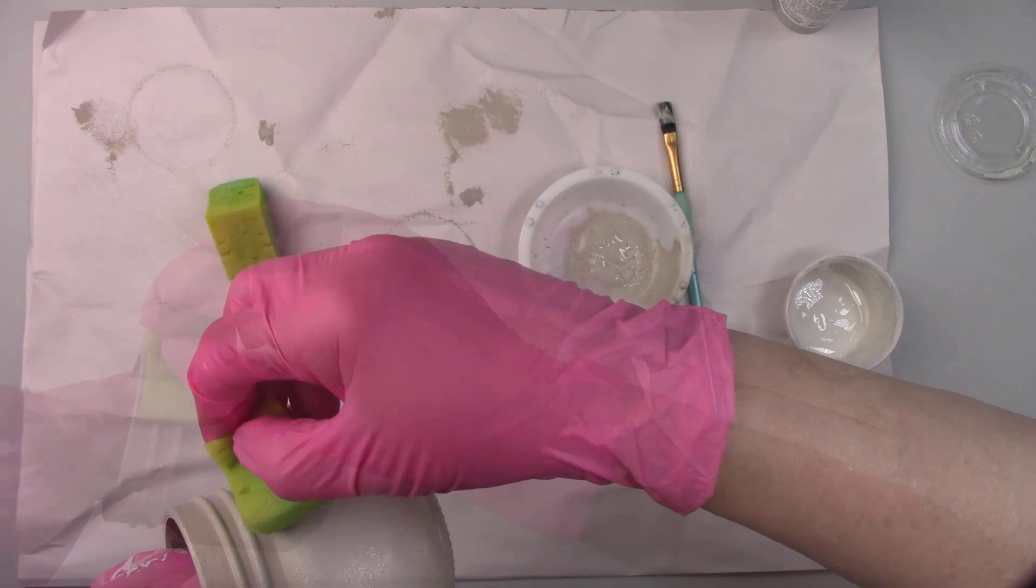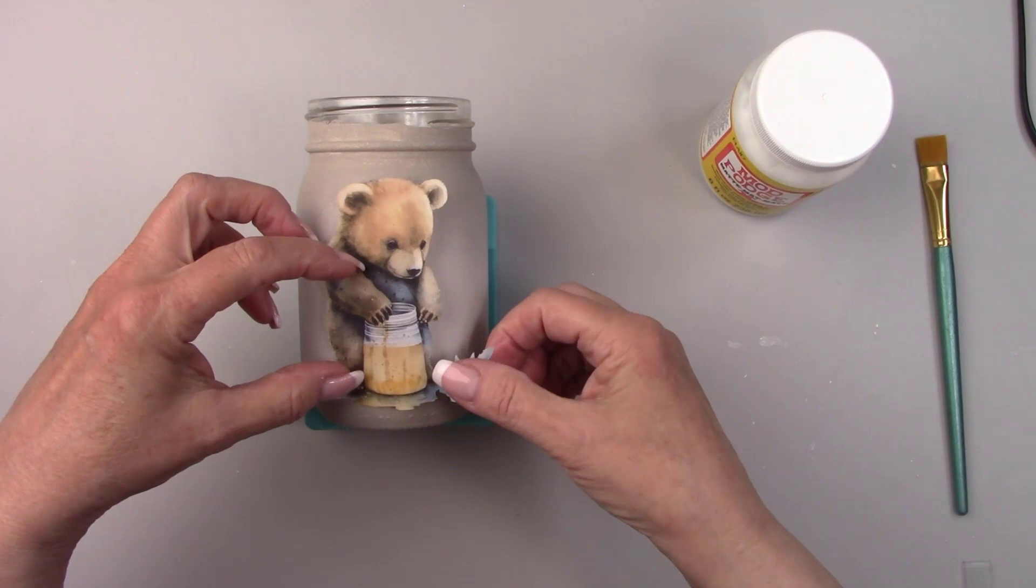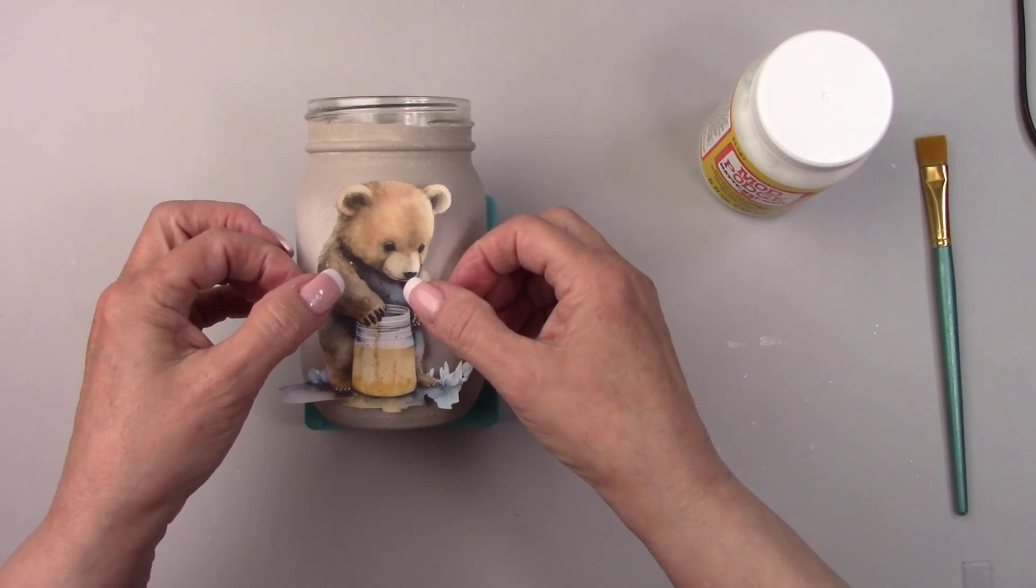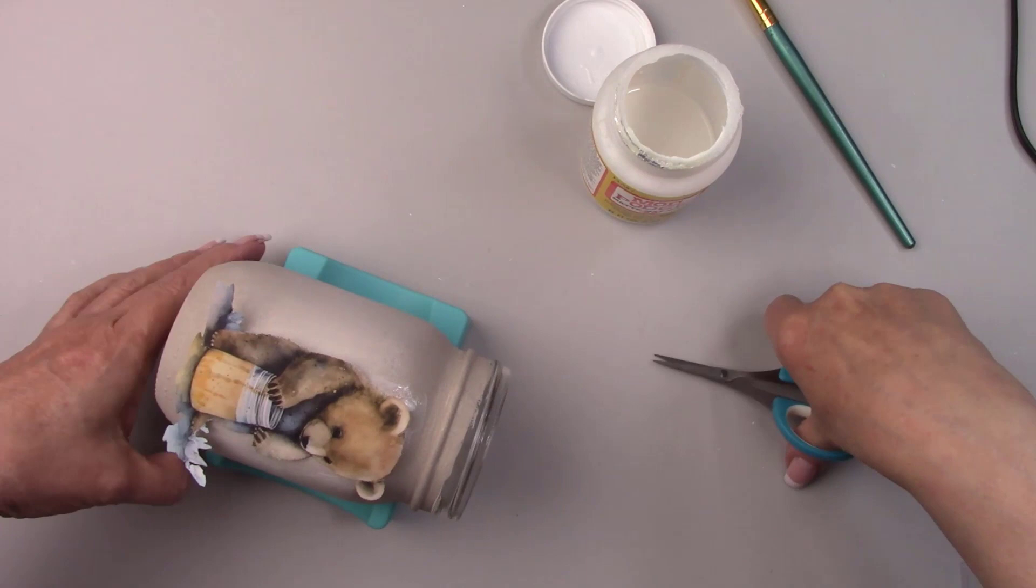I purchased this adorable Honey Bear SVG on Etsy. I had my Cricut machine print and cut it out for me. After printing and before cutting it out, I sealed it with a spray matte sealer to prevent the ink from running. I'm attaching the picture to the large jar using Mod Podge. Because the jar is rounded, I'm making some snips in the paper so it will lay flat.